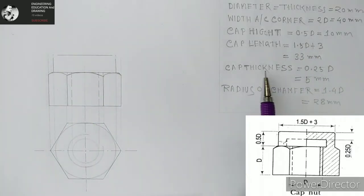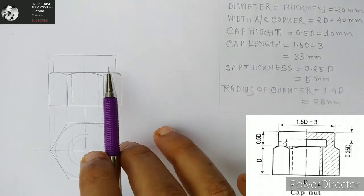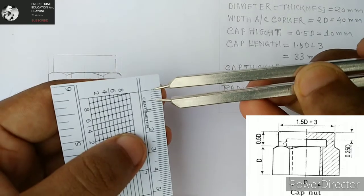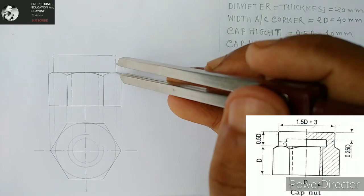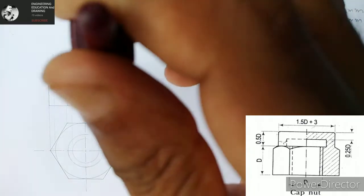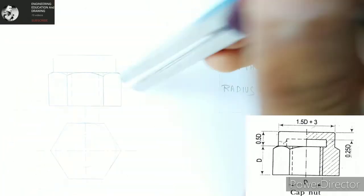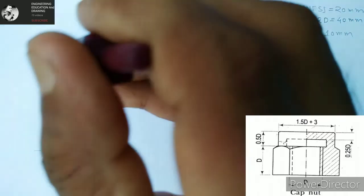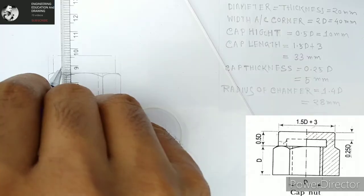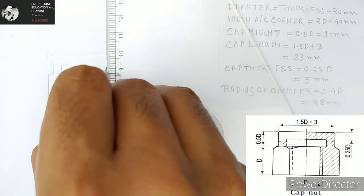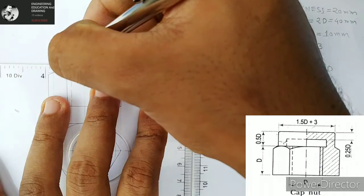Now cap thickness is 5 millimeters. We are taking 5 and making these points so we can make the cap 5 millimeters wider. The length will be 33 millimeters.